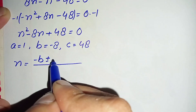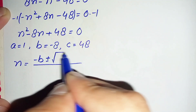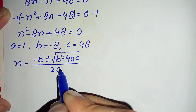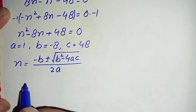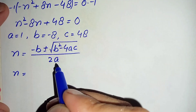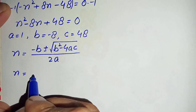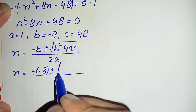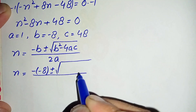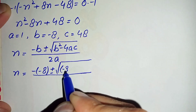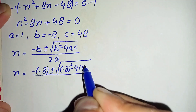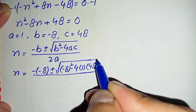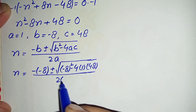The quadratic formula is n equals negative b plus or minus the square root of b squared minus 4ac, all divided by 2a. Substituting our values: b is negative 8, so we get negative of negative 8, plus or minus the square root of negative 8 squared minus 4 times 1 times 48, divided by 2 times 1.